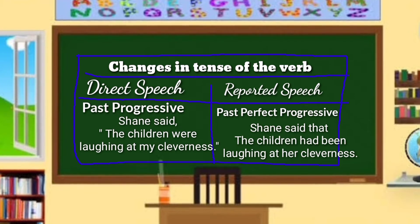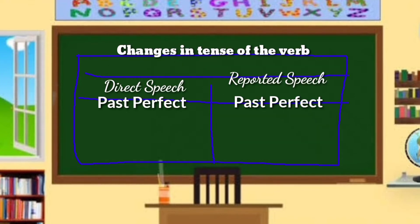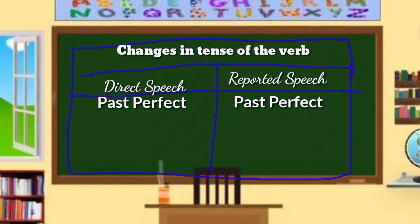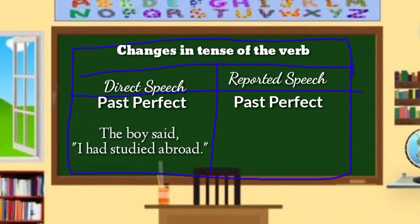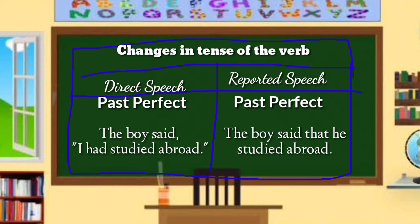Past perfect in direct speech remains past perfect in reported speech — no change required. For example — DS: The boy said, 'I had studied abroad.' RS: The boy said that he had studied abroad. The verb 'had studied' is in past perfect in both direct and reported speech.